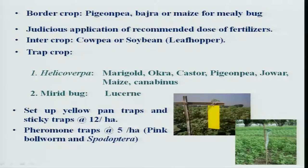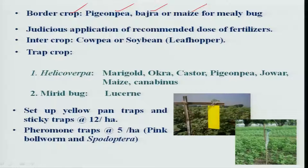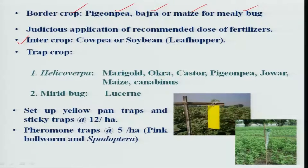Border cropping can be adapted for management of bollworms by bordering cotton with pigeon pea, bajra, or maize, which can even prevent penetration of mealybug into the main crop. Judicious use of fertilizers is also important — farmers applying excess nitrogen attract more sucking pests. Intercropping cotton with cowpea can reduce leafhopper damage.